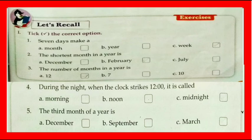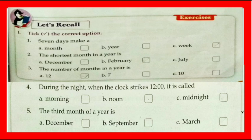We have completed the chapter. Now let's look at the textbook exercise. The correct answers are: seven days make a week; the shortest month in a year is February; the number of months in a year is 12; and during the night when the clock strikes 12, it is midnight. The third month of the year is March.